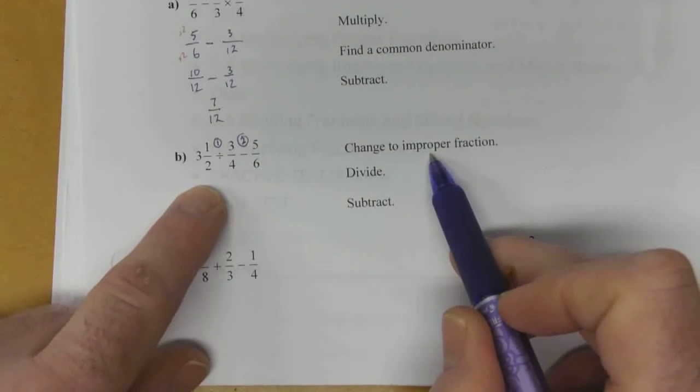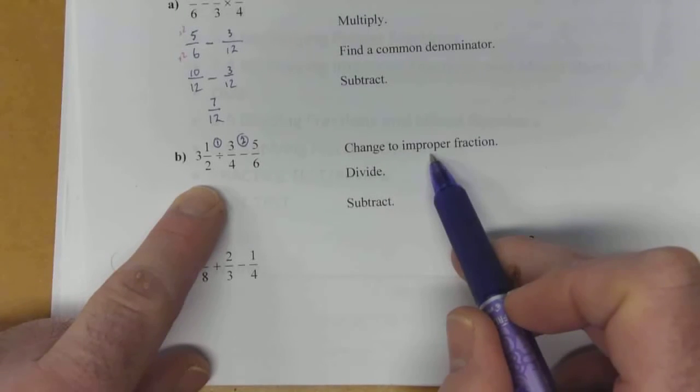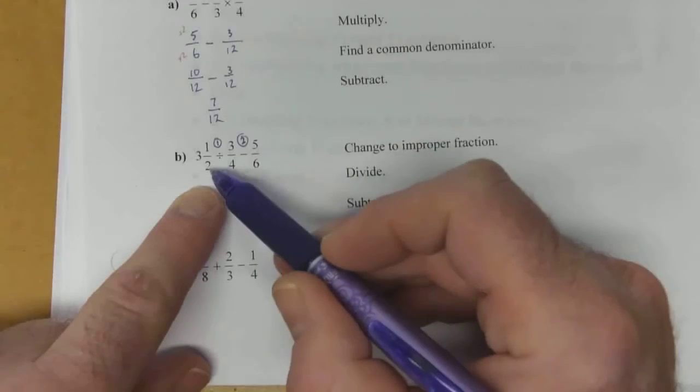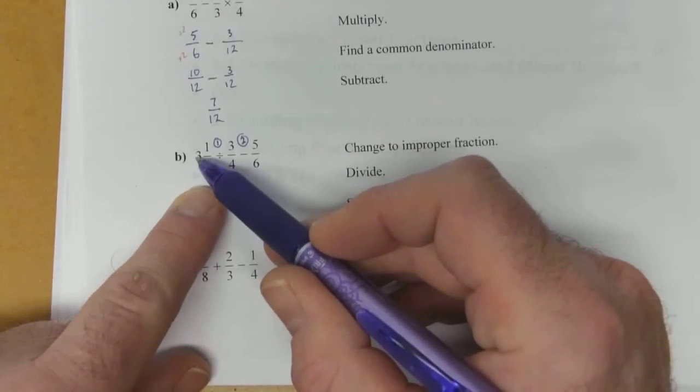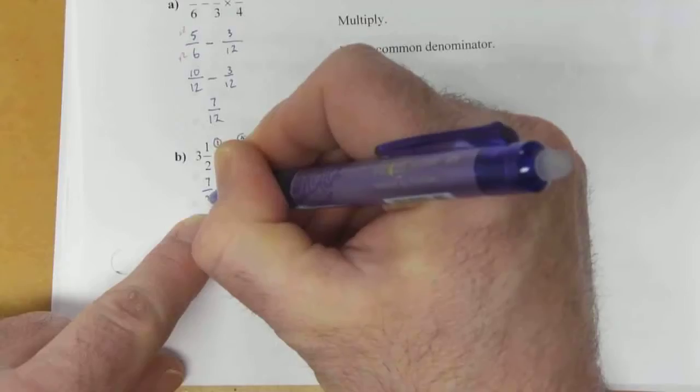Again, division is going to come first before the subtraction. But we're going to change to an improper fraction first. That will make the division much simpler. So 3 times 2 is 6. 6 plus 1 is 7. This becomes 7 halves.